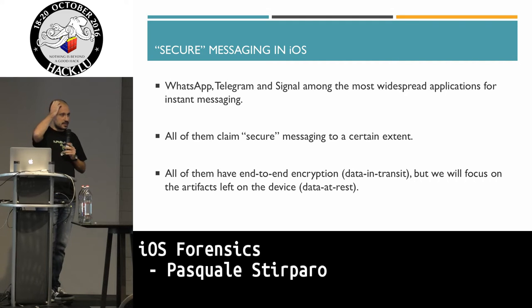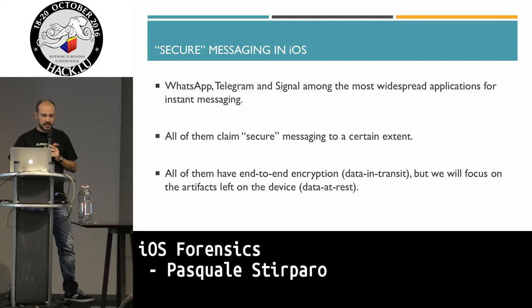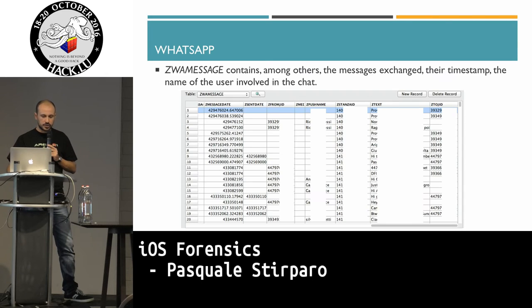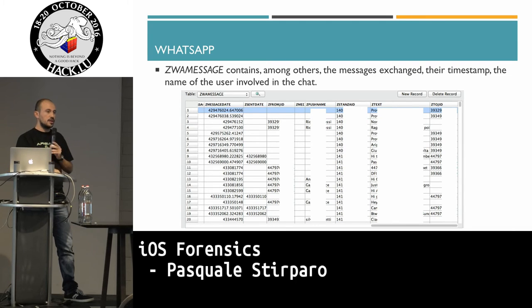Let's quickly compare the three applications: WhatsApp, Telegram, and Signal, which are the most popular and claim some level of security. We're interested in data at rest, not encryption and data in transit. For WhatsApp, these are the locations where you can get the data — the SQLite database you're most interested in. You get all the data and information, and all the chats are in clear text. These are also exported in the backup if you do one, which is not encrypted. And yes, WhatsApp does store the screenshot if it happens while you are typing.